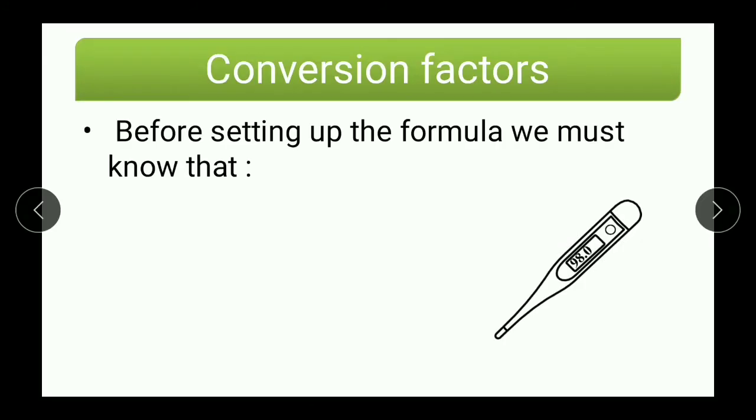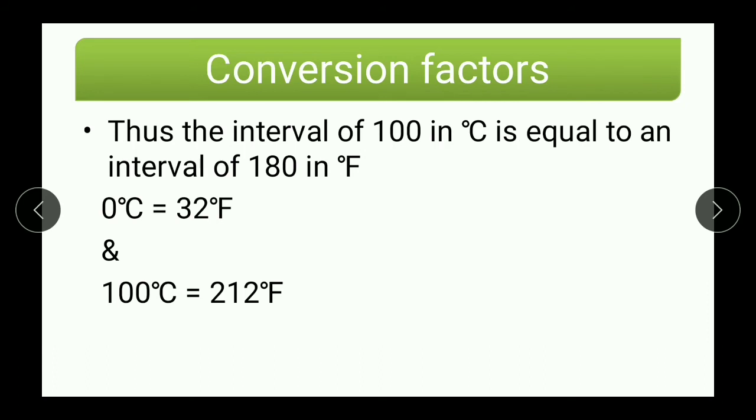Before setting up the formula for conversion factor, we must know few things. For example, 0 degree Celsius is 32 degree Fahrenheit. And 100 degree Celsius is 212 degree Fahrenheit. So, these two things we must know by heart. The interval of 100 in degrees Celsius is equal to interval of 180 in degree Fahrenheit. And how did we get that? Let us see. 100 minus 0 degree Celsius is 100 degree Celsius. And 212 minus 32 degree Fahrenheit gives you 180 degree Fahrenheit. That's how we get these numbers.